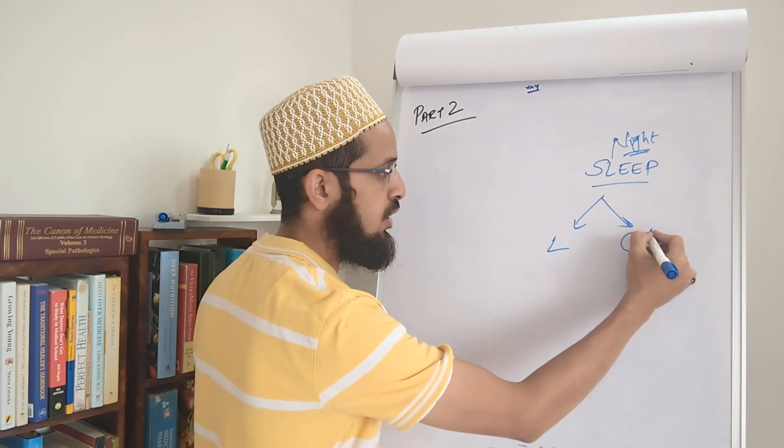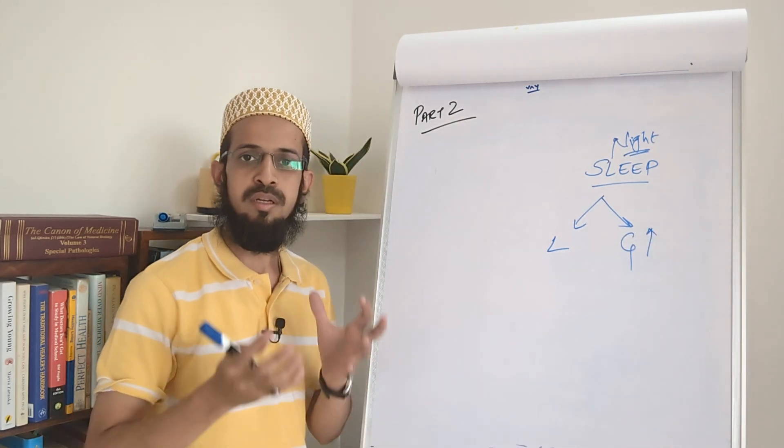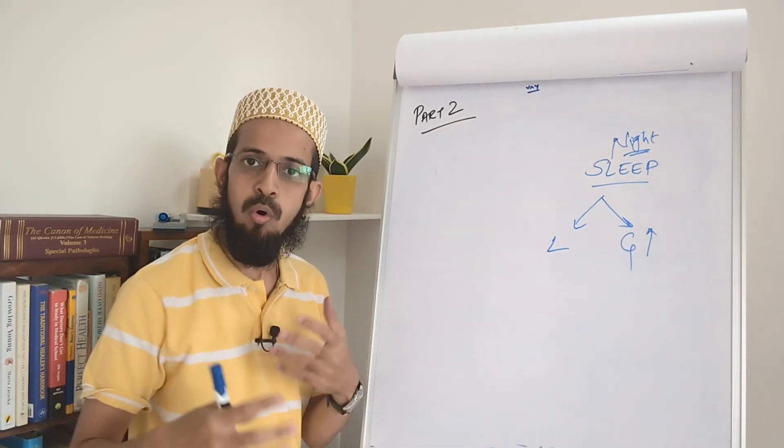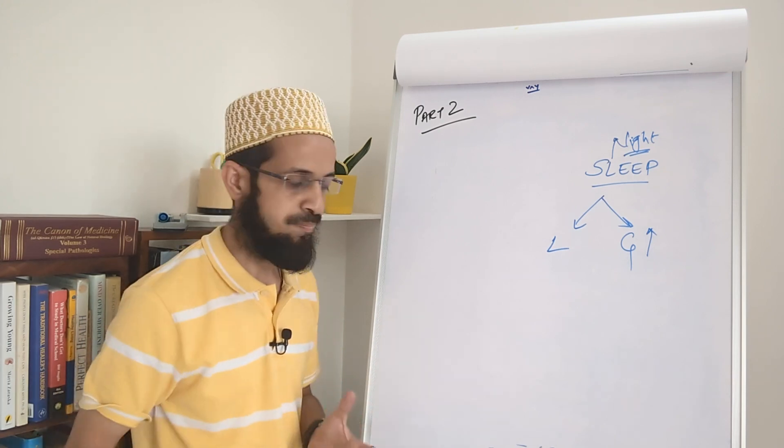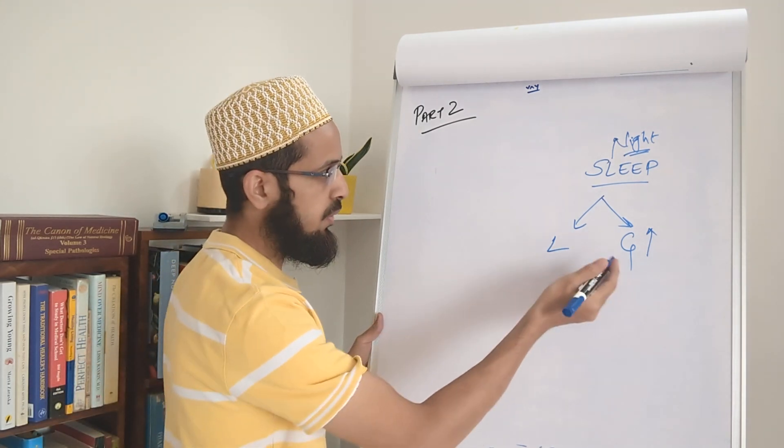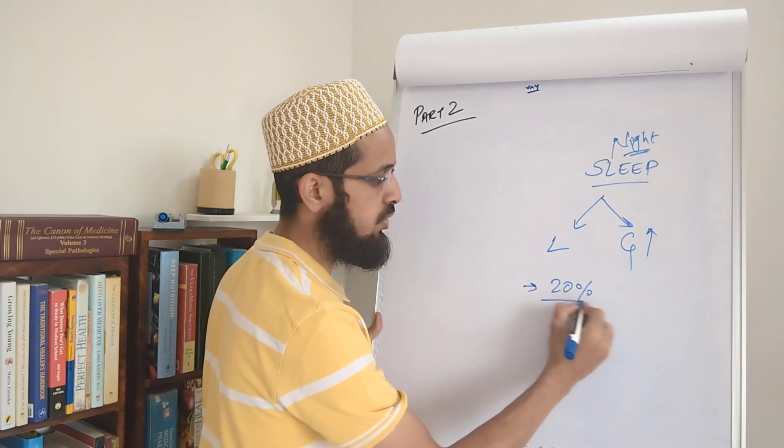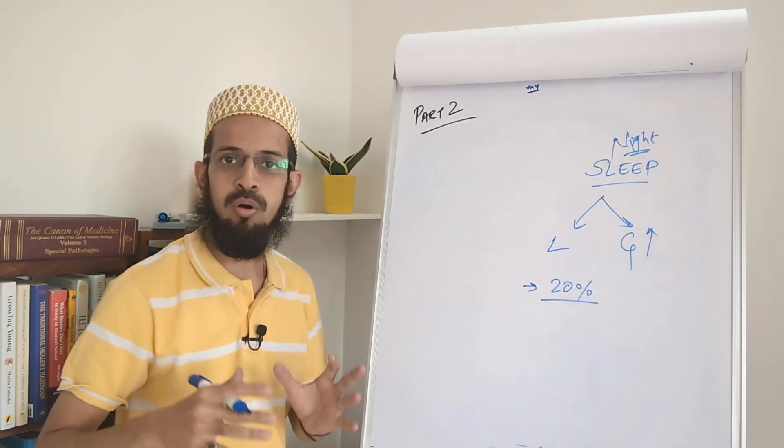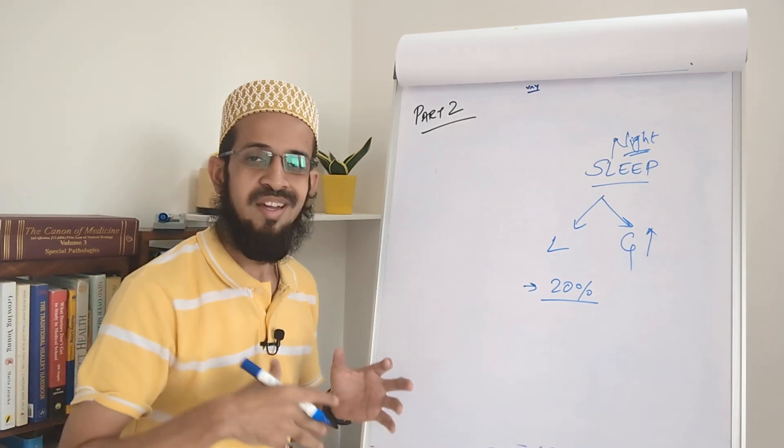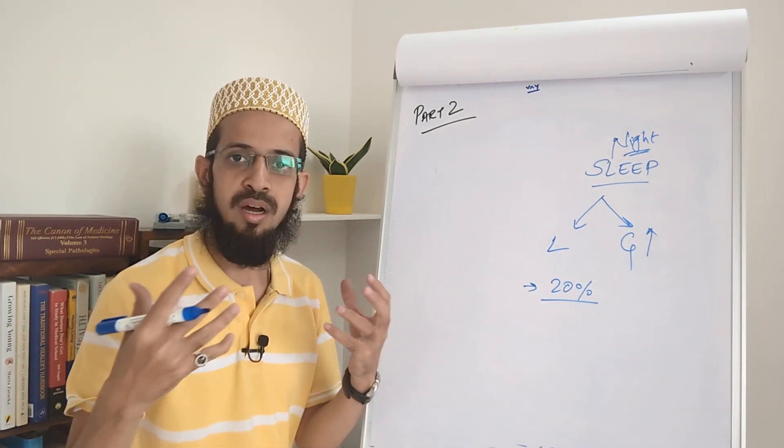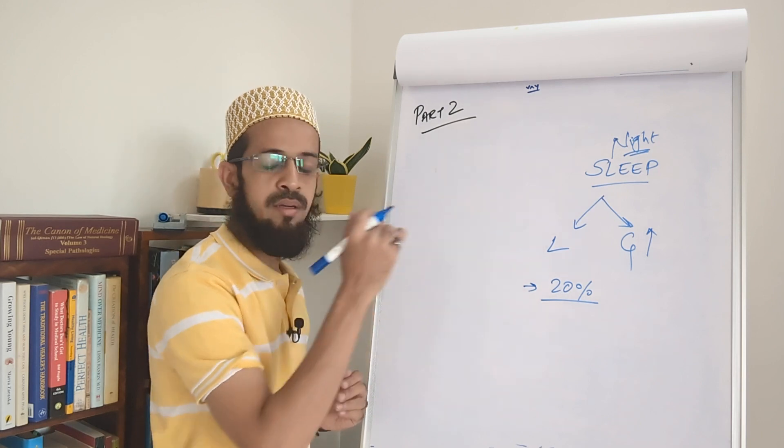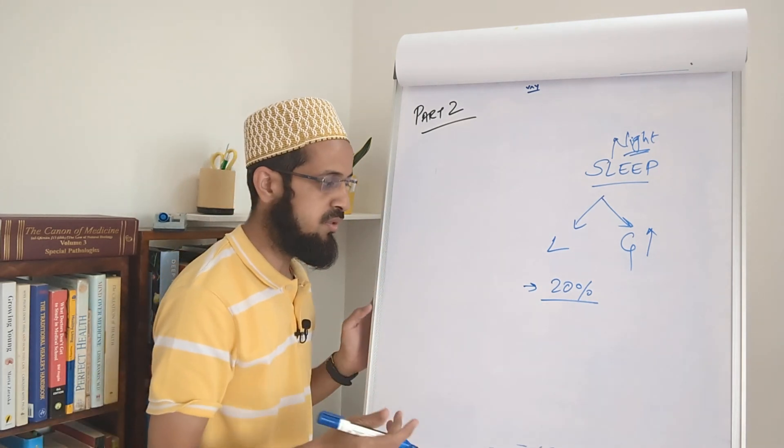But when your sleep is compromised, the ghrelin which is the hunger hormone, it increases and you feel more hungry throughout the day. Also what happens is that when your sleep is compromised, it is said that you tend to eat 20% more amount of food. So you eat extra calories, you eat extra amount of food when your sleep is compromised.